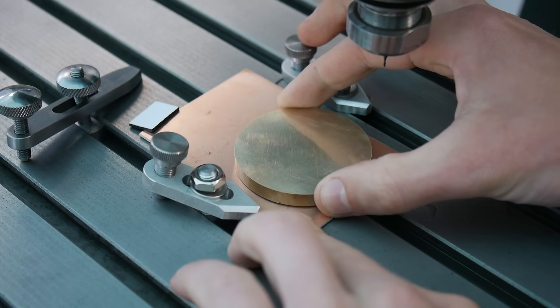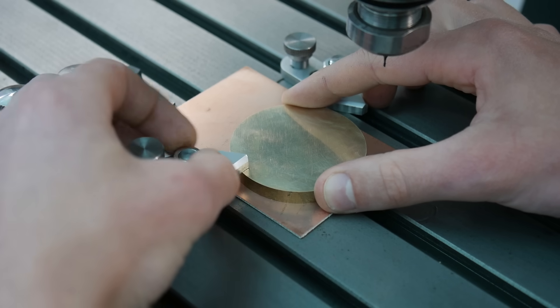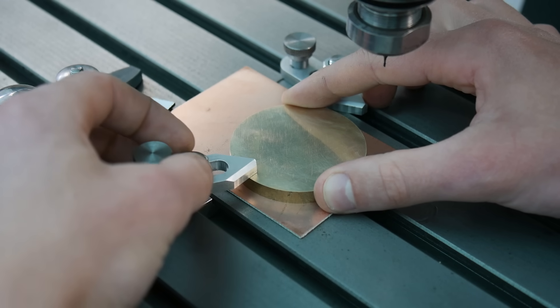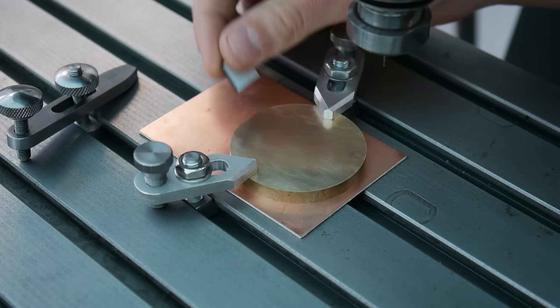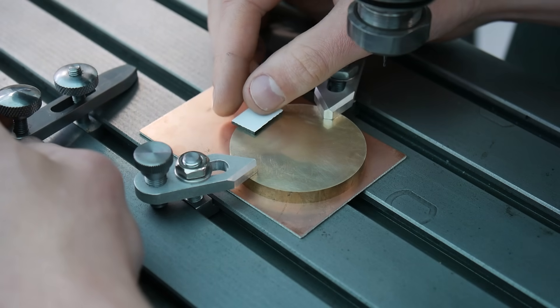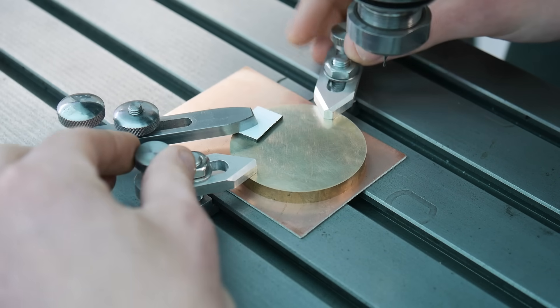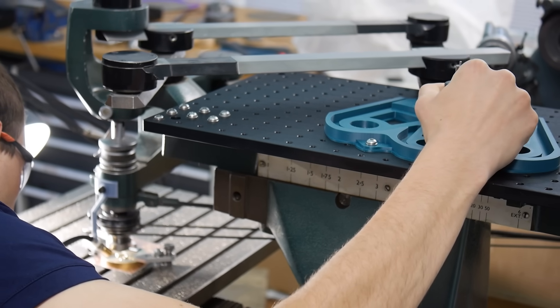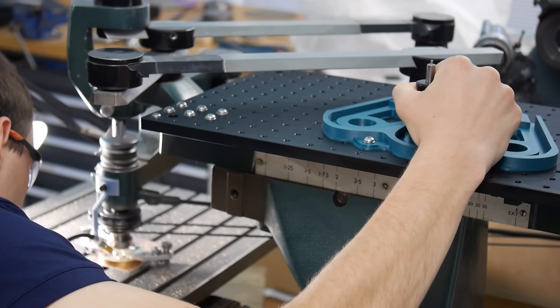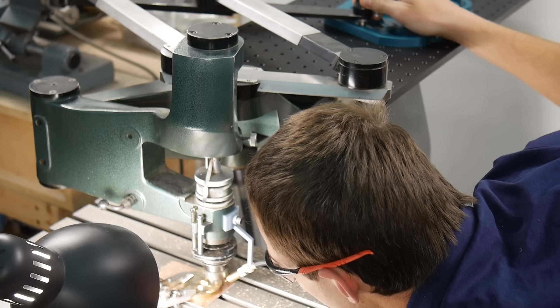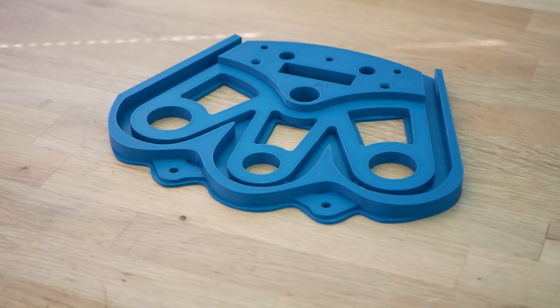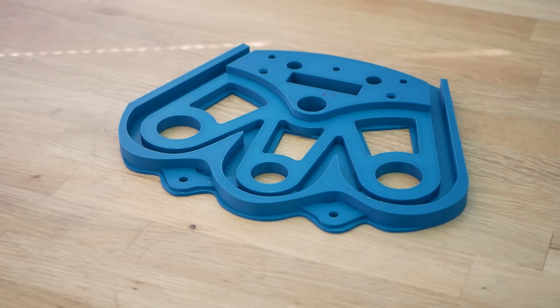The barrel bridge begins life as a disk of brass faced and lapped flat before it's transferred to the pantograph ready to be shaped into the bridge. As you may be familiar from our previous videos, the pantograph allows me to copy the shape of a scaled up template into the metal, but it's been requested that I talk more about the template design itself, so let's have a more detailed look at the templates here.